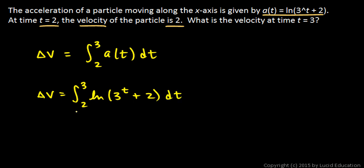And then that will be the change in v from 2 to 3. So just add that to the velocity at 2, which we know is 2, and the result will be the velocity at 3, which is what we're looking for.